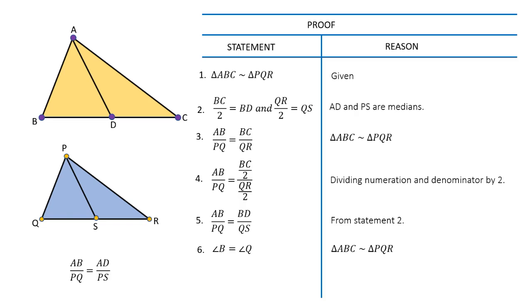Hence, by SAS principle, triangle ABD and triangle PQS are similar to each other. This implies that corresponding sides will be proportional to each other.